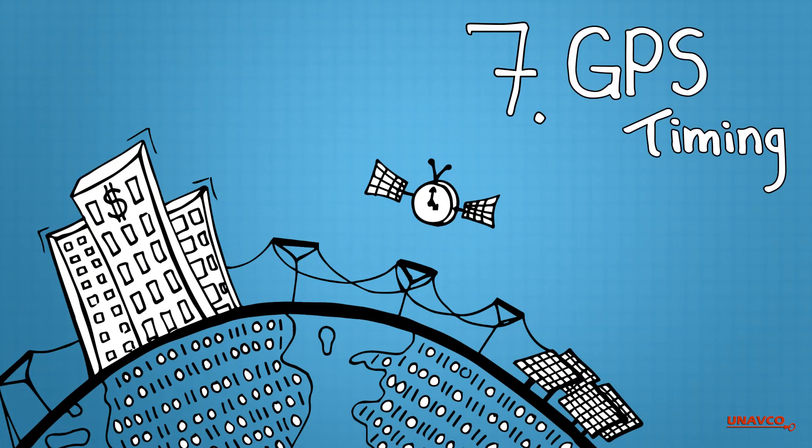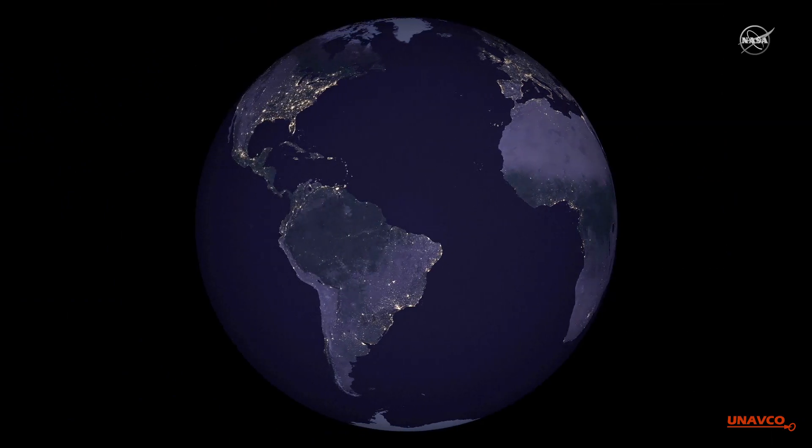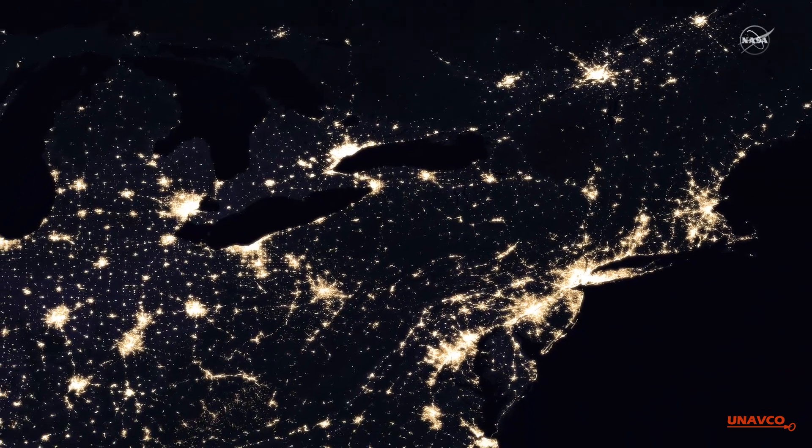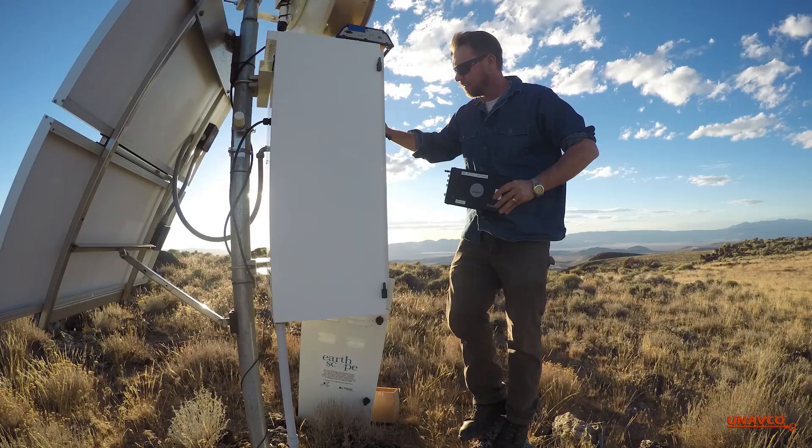GPS provides another essential service to society, timing. GPS satellites contain atomic clocks, which can relay super accurate time information to people who need it most. World financial markets, power grids, and hazard communication systems all rely on GPS data for precise timekeeping.